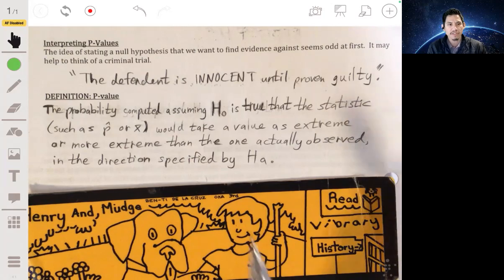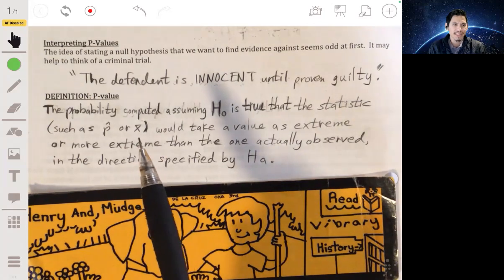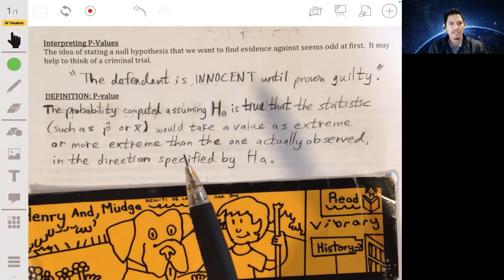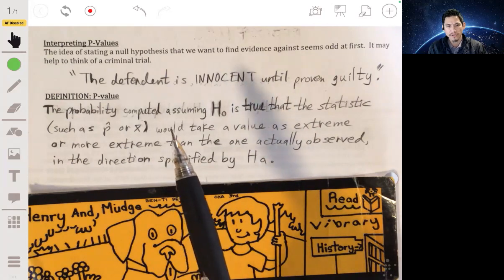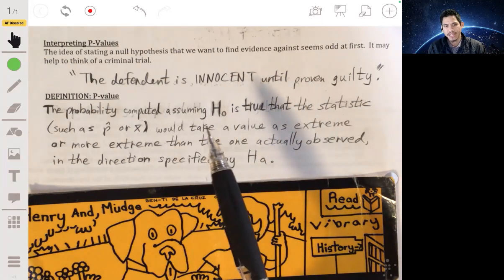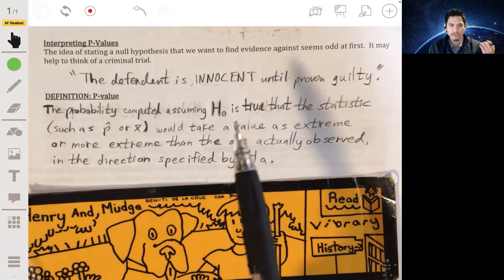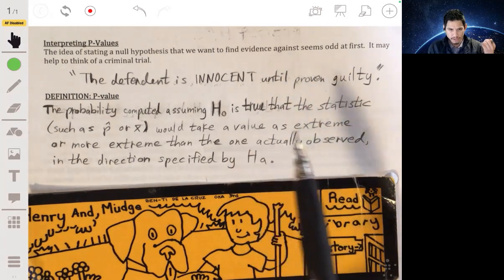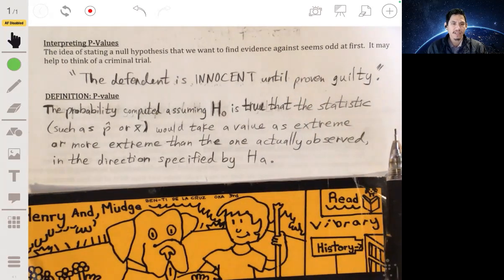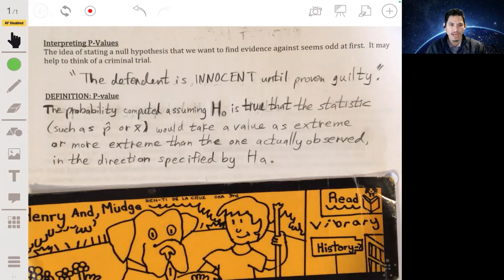So formally, you'll see a definition usually something like this in your textbook that says that the p-value is a probability computed assuming that the null hypothesis, your H₀, is true. So it's a probability assuming that your null hypothesis is true that you would get a statistic as extreme or more extreme than the one you actually got in that direction.